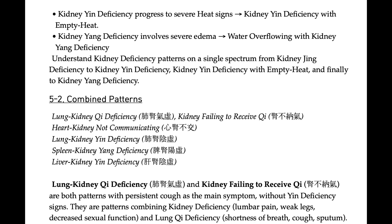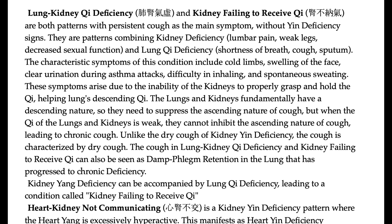Combined patterns with kidney. Lung-kidney qi deficiency and kidney failing to receive qi are both patterns with persistent cough as the main symptom without yin deficiency signs. They combine kidney deficiency symptoms — lumbar pain, weak legs, decreased sexual function — and lung qi deficiency symptoms — shortness of breath, cough, sputum. Characteristic symptoms include cold limbs, swelling of the face, clear urination during asthma attacks, difficulty in inhaling, and spontaneous sweating, arising from the inability of the kidneys to properly grasp and hold the qi, helping the lungs descend the qi.